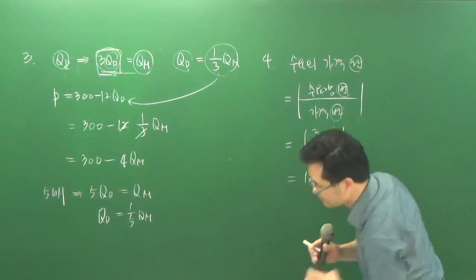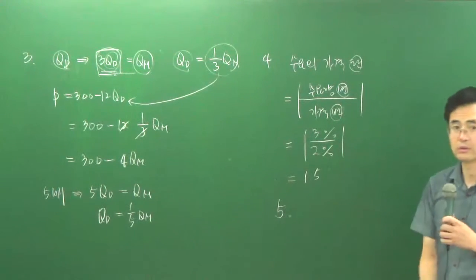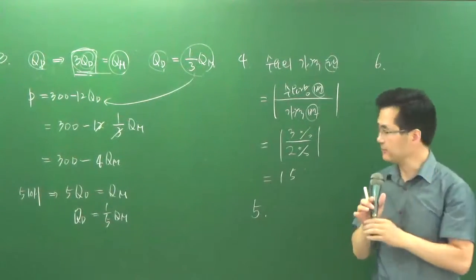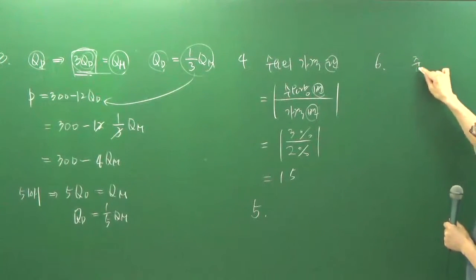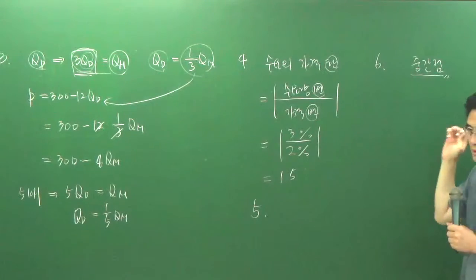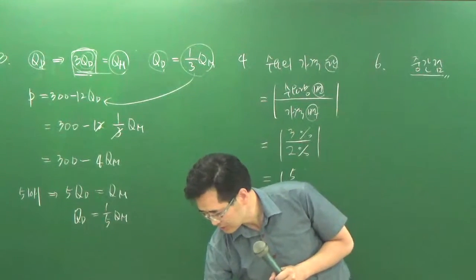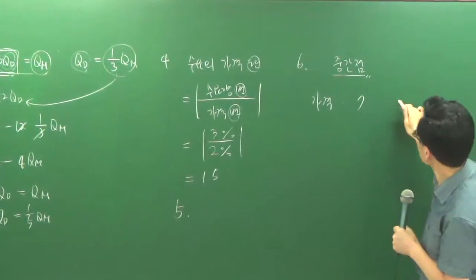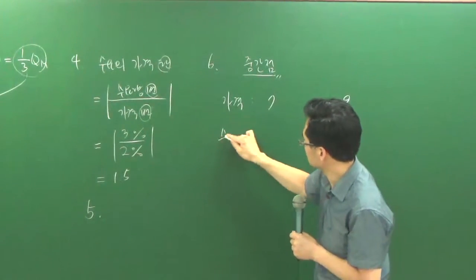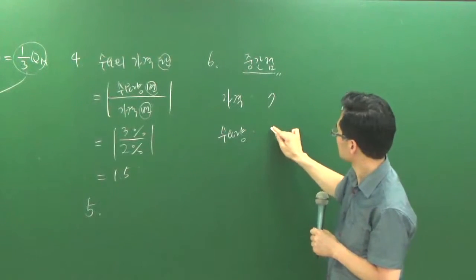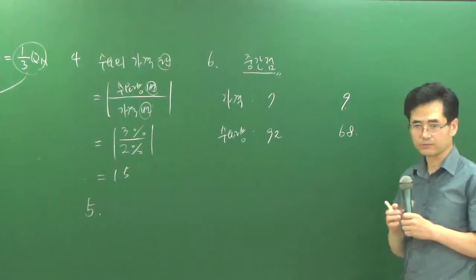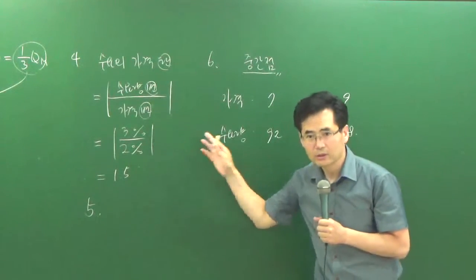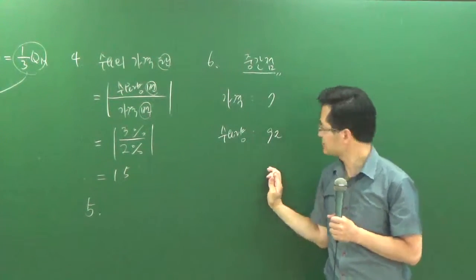근데 이제 6번이 문제죠. 6번은 이게 중간점을 이용한 거잖아요. 그러니까 중간점의 의미만 아시면 되는 거예요. 중간점의 의미는 한가운데잖아요. 이게 나오는 이유가 지금 여기 7만원에서 9만원으로 가나요? 7만원에서 9만원으로 변합니다. 그럴 때 수요량은 92에서 68 이렇게 변하죠.